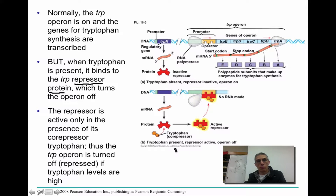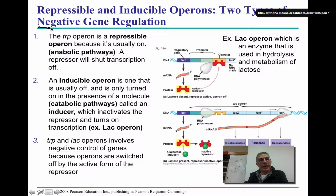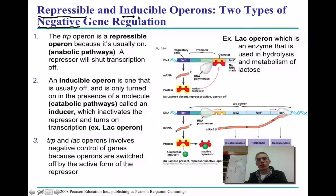When tryptophan is present in the environment — in other words we have plenty — this co-repressor binds to the active repressor. Once it binds to that promoter region, RNA polymerase cannot make the messenger RNA strand, so you can't code for the polypeptide, which in this case is tryptophan. This is considered a negative form of gene regulation. There are two different types of negative gene regulation, each using a different type of operon. The first is a repressible operon — the tryptophan operon is repressible because normally it's on; it's an anabolic pathway and a repressor shuts transcription down when we have plenty of tryptophan.